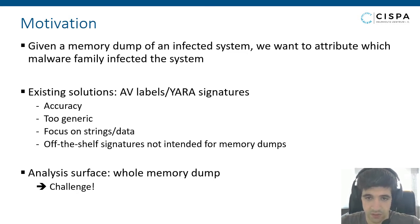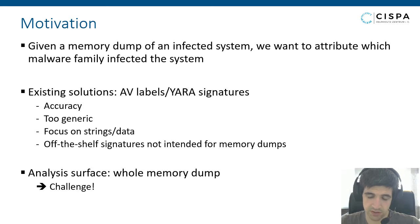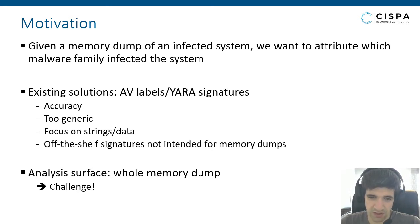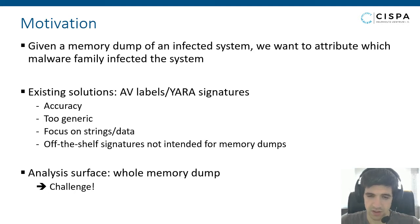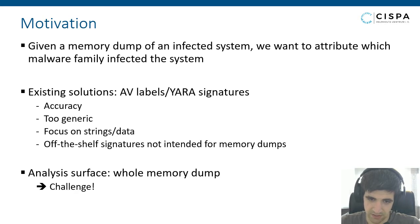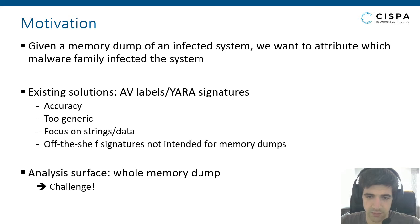If we look at existing solutions that we could possibly use for such a task, there are AV labels or Yara signatures. The problem is these are usually very generic signatures. They are not very accurate because they mostly focus on strings and data. If you have ever worked with Yara signatures, you apply it to a sample and it matches random data as belonging to a certain malware family — it doesn't really work that well.